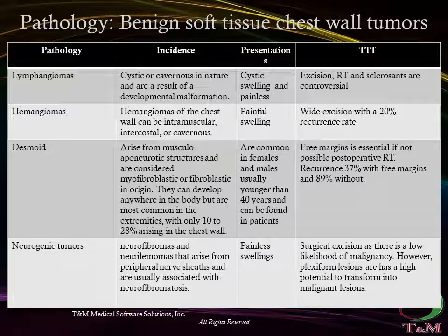Desmoid tumor histology is benign, but because of their aggressive growth rates and tendency to grow into nearby structures or cause compressive symptoms, they can be considered malignant. Desmoid tumors are common in females, and males usually younger than 40 years, and can be found in patients with familial adenomatous polyposis. Resection to tumor-free margins is needed for cure. When negative margins are not possible, radiation should be considered. Recurrence rates for desmoid tumors are high.